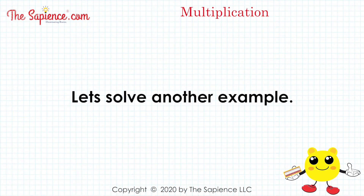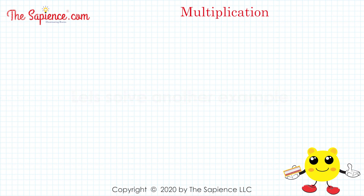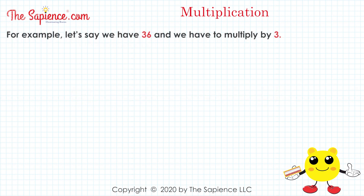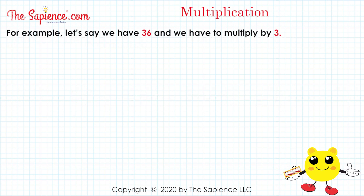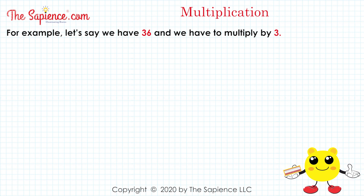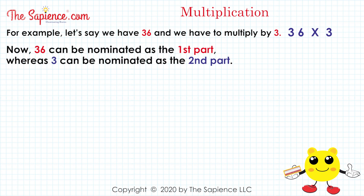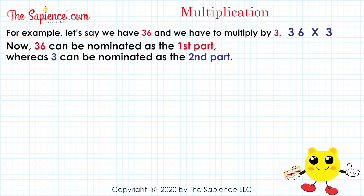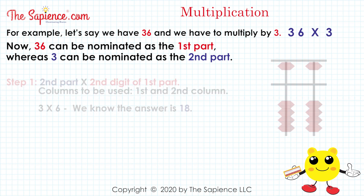Let's solve another example. Let's say we have 36 and we have to multiply by 3. 36 multiplied by 3. Now, 36 can be nominated as the first part, whereas 3 can be nominated as the second part.